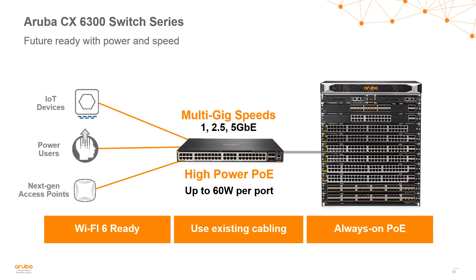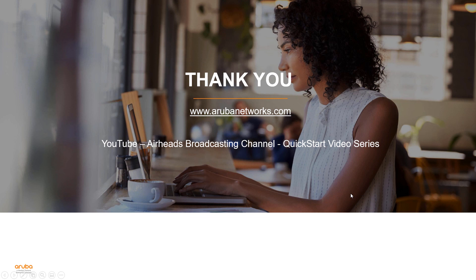High performance delivered consistently at the access layer is more important than ever, now that we have Wi-Fi 6 and all these IoT devices. Being able to scale and provide the PoE and multi-gigabit speeds required at various access layer environments is very critical, and the 6300 switch series helps provide that for our customers. That was a quick introduction to the Aruba CX 6300 switch series — keep an eye out on the YouTube Airheads broadcasting channel for additional quick start videos covering the CX switch series and operating system.